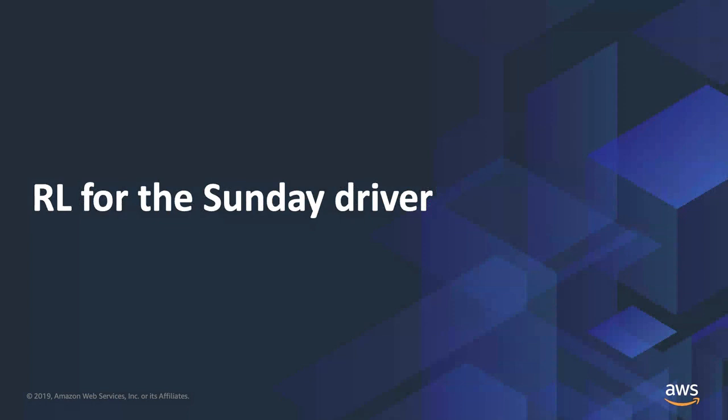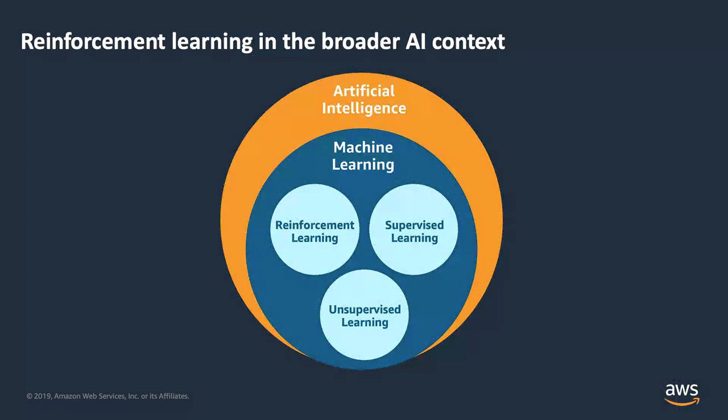Let's move on to reinforcement learning, or RL. Reinforcement learning is part of the bigger artificial intelligence umbrella of computing, particularly in the machine learning portion. Machine learning is the act of giving examples of data to a machine and allowing it to process them with a goal in mind. When we discuss machine learning, we typically are discussing three disciplines.